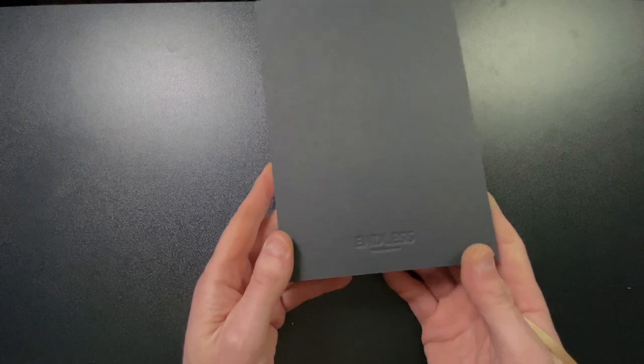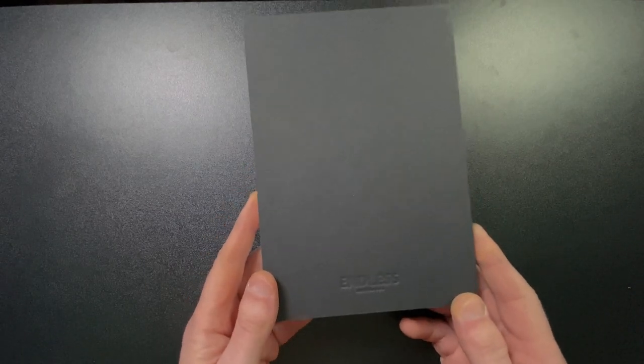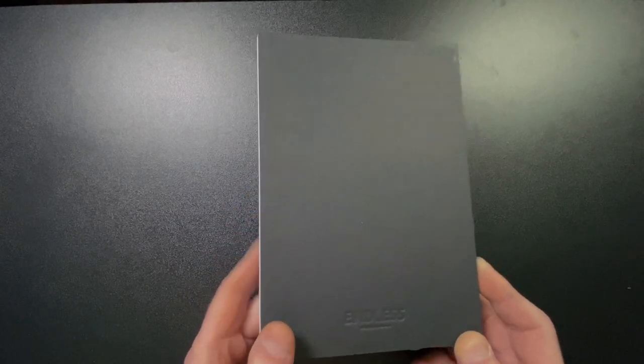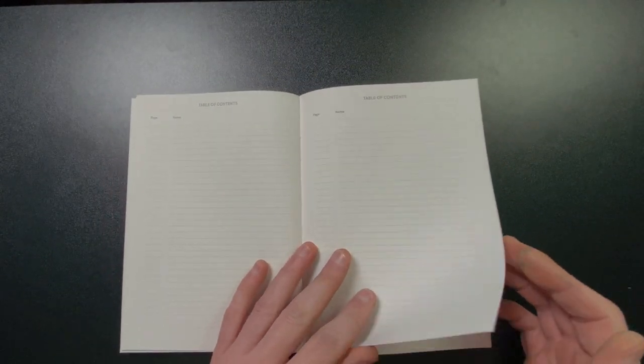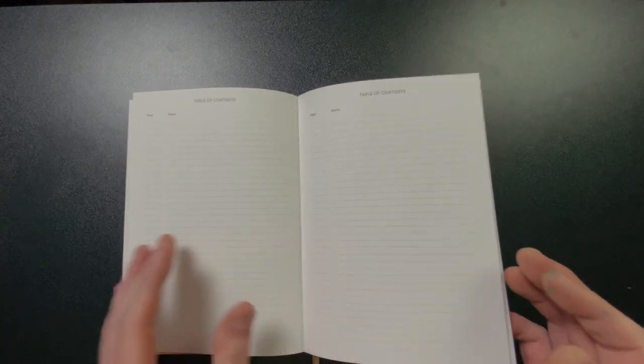It comes in two different colors, night sky or beach sand. This is the night sky, obviously. See the little embossed logo on the bottom there. The price on this is $18. So it definitely lays flat. The binding is such that you can just put the notebook down. Has the Regalia paper, 80 GSM acid-free, table of contents, page marker, 187 pages.